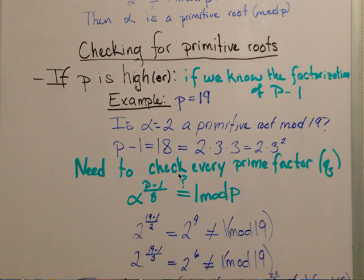Now we have to check every prime factor, which we're calling q. We're asking if alpha to the power of (p minus 1) over q is congruent to 1 mod p.